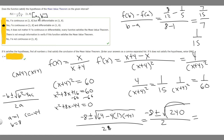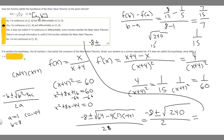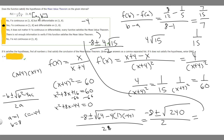Now we simplify √240: 240 = 16 × 15, so √240 = 4√15. This gives us (−8 ± 4√15) / 2, which simplifies to −4 ± 2√15. We need to check which solution fits our interval [1, 8]. The minus case gives a negative number, so it doesn't fit. Therefore the only valid answer is c = −4 + 2√15.